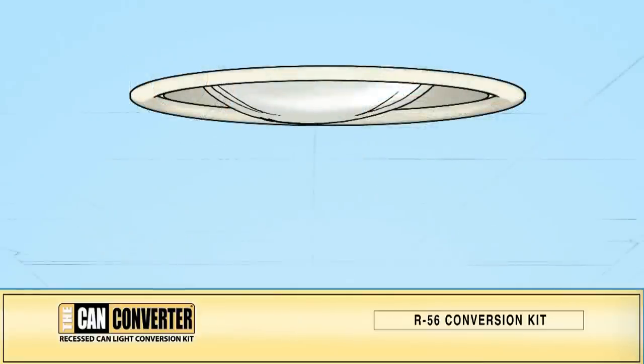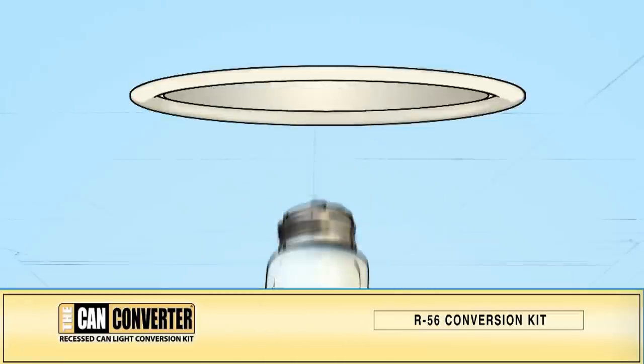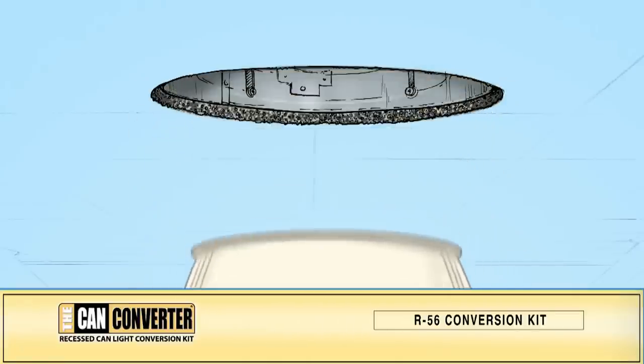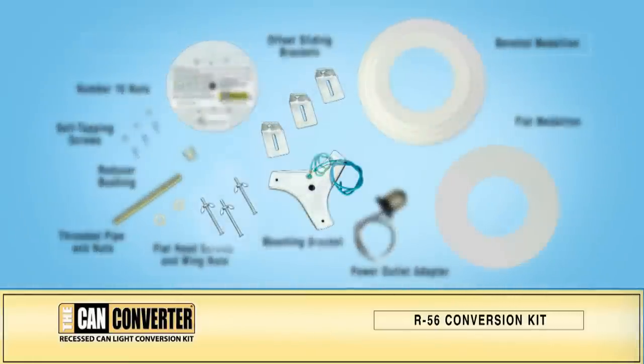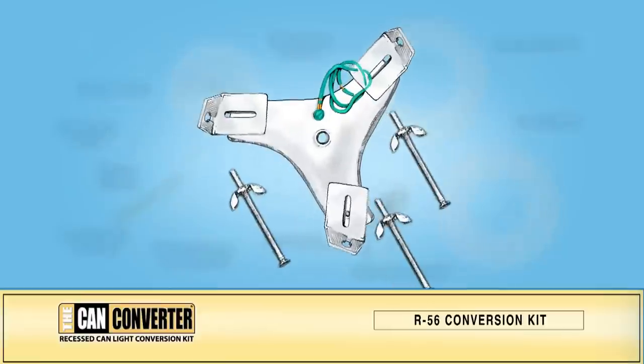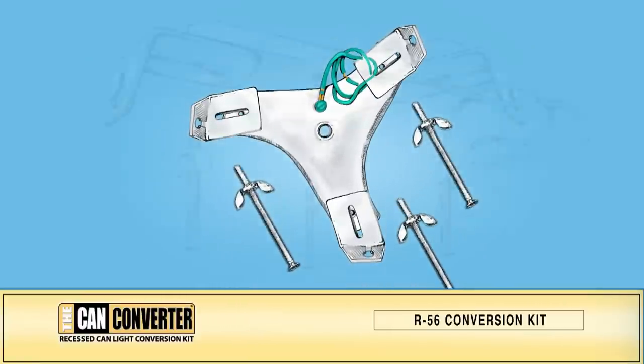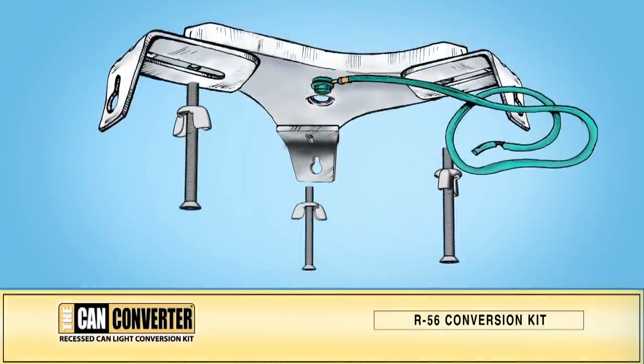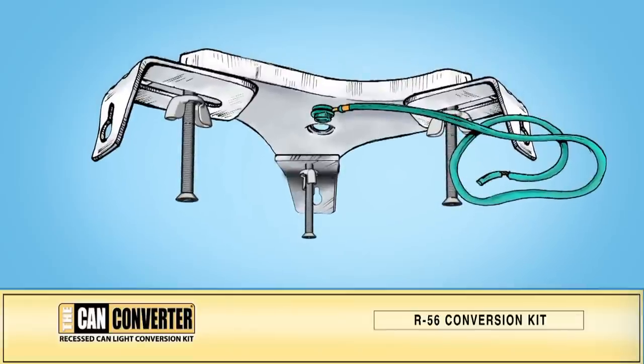On your existing CAN light, remove the light bulb and the CAN trim. Next, put together the mounting bracket assembly using the mounting bracket, the three offset sliding brackets, and the three flat head screws along with the wing nuts.